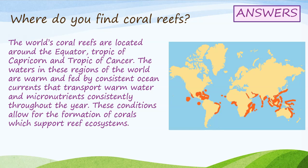Welcome back. Here is a model answer that you can compare with what you've written in your notebook. The world's coral reefs are located around the equator, Tropic of Capricorn and Tropic of Cancer. The waters in these regions are warm and fed by consistent ocean currents that transport warm water and micronutrients throughout the year. These conditions allow for the formation of corals which support reef ecosystems.